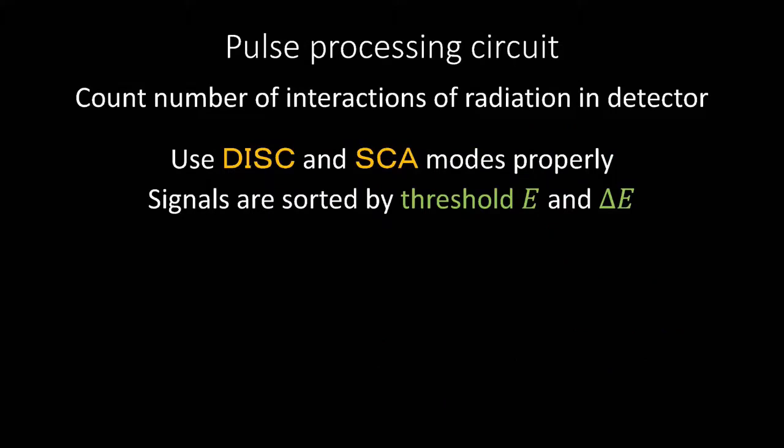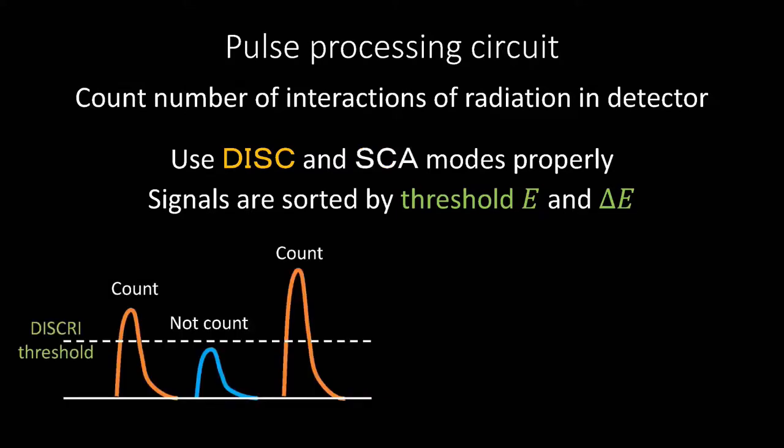The detector has two modes, DISC and SCA. The signals are sorted according to the wave height, threshold E, and the interval of the wave height, delta E.